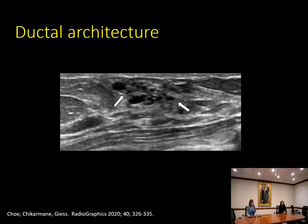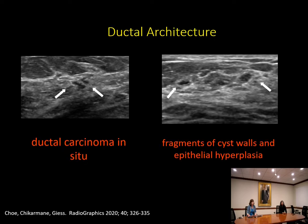Ductal architecture occurs in a number of the proposed classification systems. This is an example in a 25-year-old with a palpable finding — she has small anechoic areas aligned in a linear distribution suggestive of a duct, with some larger outpouchings or cystic dilatations around the duct. Two more examples of ductal architecture are shown: the image on the left is DCIS, with small anechoic areas aligned in a linear distribution, and a larger area with smaller anechoic oblong areas suggesting a ductal orientation directed towards the nipple.